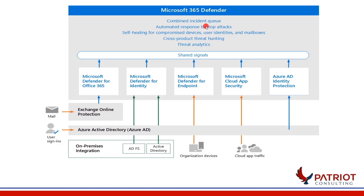The different components of M365 Defender: first, Defender for Office — covering our email, safeguarding against malicious threats like phishing emails, links, and URLs. It shares signals from any of those activities to M365 Defender. There's also EOP — Exchange Online Protection — integrated to provide end-to-end protection for mail and attachments.